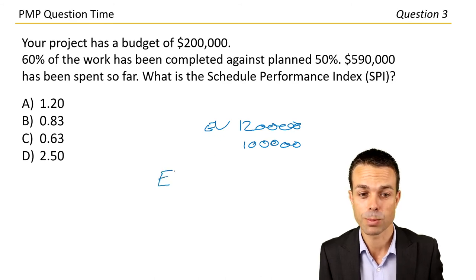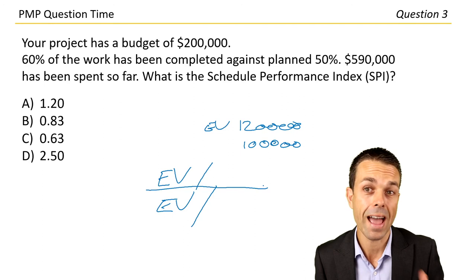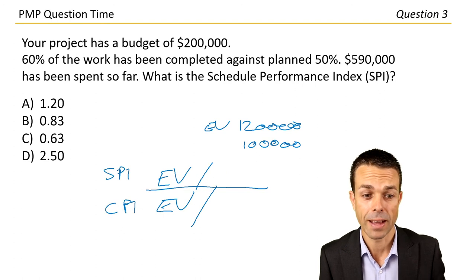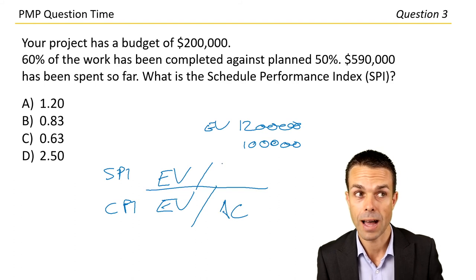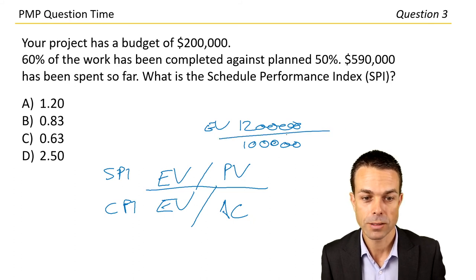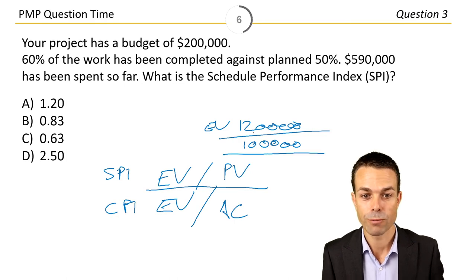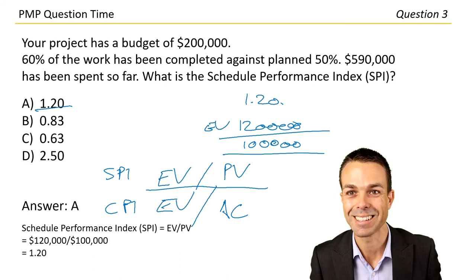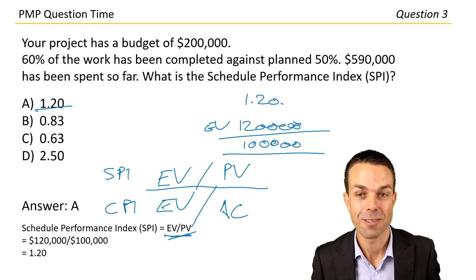Schedule performance index — these ones I can do. Schedule and cost performance index are earned value divided by something. The cost performance index is EV divided by actual cost, and the schedule performance index is EV divided by planned value. So earned value $120,000 divided by planned value $100,000 — that's going to be 1.20. Let's go with letter A. Schedule performance index: EV divided by planned value. Fantastic — answer A!